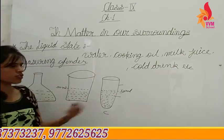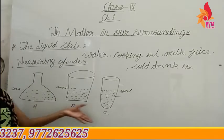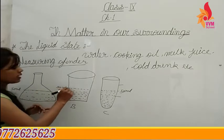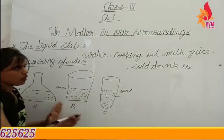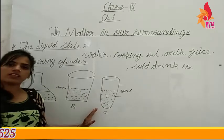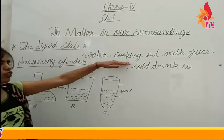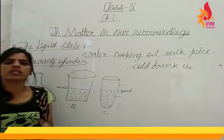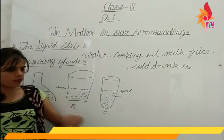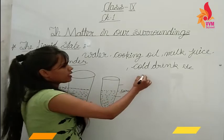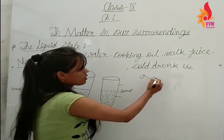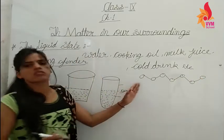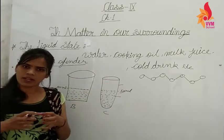The shape of the container affects the shape of the liquid inside it. When we look at each container, we see the liquid comes from 50 ml. We put water, then cooking oil, then milk — each takes the shape of that container.